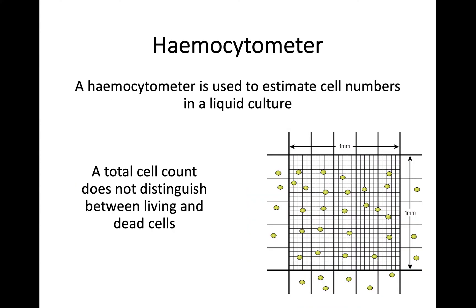In terms of counting cells, we use a piece of equipment called a hemocytometer. Essentially it is like a glass slide in a microscope that has an absolutely tiny grid, viewed through the microscope, where you can count the number of cells as shown in the image on the right. A total cell count is just counting the total number of cells in that area — it does not distinguish between living and dead cells.